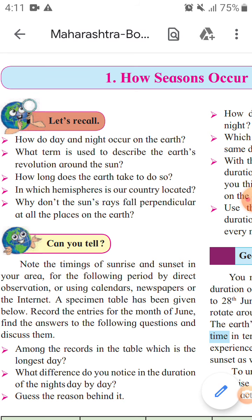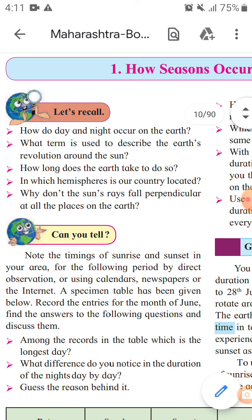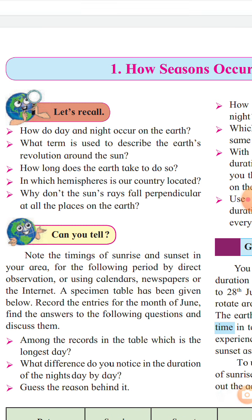Next question: How long does the earth take to rotate? Earth rotates once in about 24 hours with respect to the sun, but once every 23 hours, 54 minutes, and 4 seconds with respect to other distant stars.